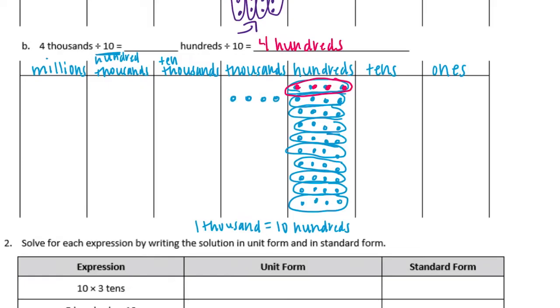What we did first was start with forty hundreds divided by ten and got four hundreds, or four hundred. So four thousand divided by ten is four hundred.